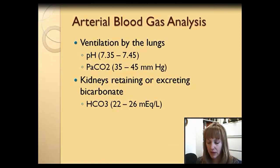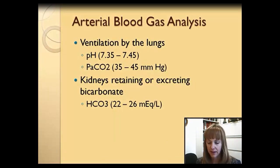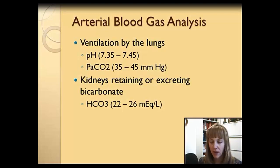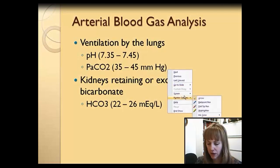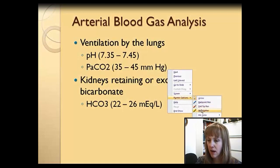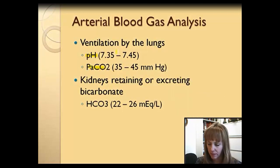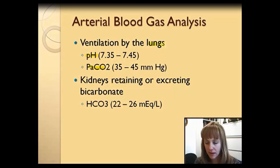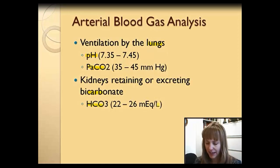Blood gas measurements remain the major diagnostic tool for evaluating acid-base states. We're going to use these values when assessing acid-base balance: pH and PaCO2 — that's partial pressure of carbon dioxide in the arterial blood — are listed here. This reflects the adequacy of ventilation by the lungs. Whereas bicarb reflects the activity of the kidneys in retaining or excreting bicarb.